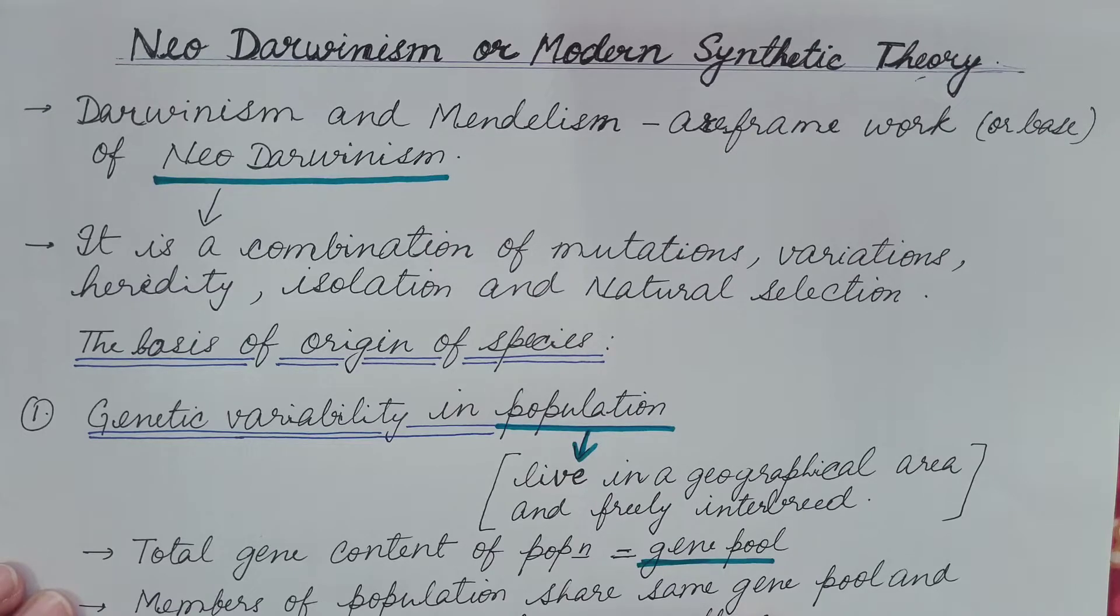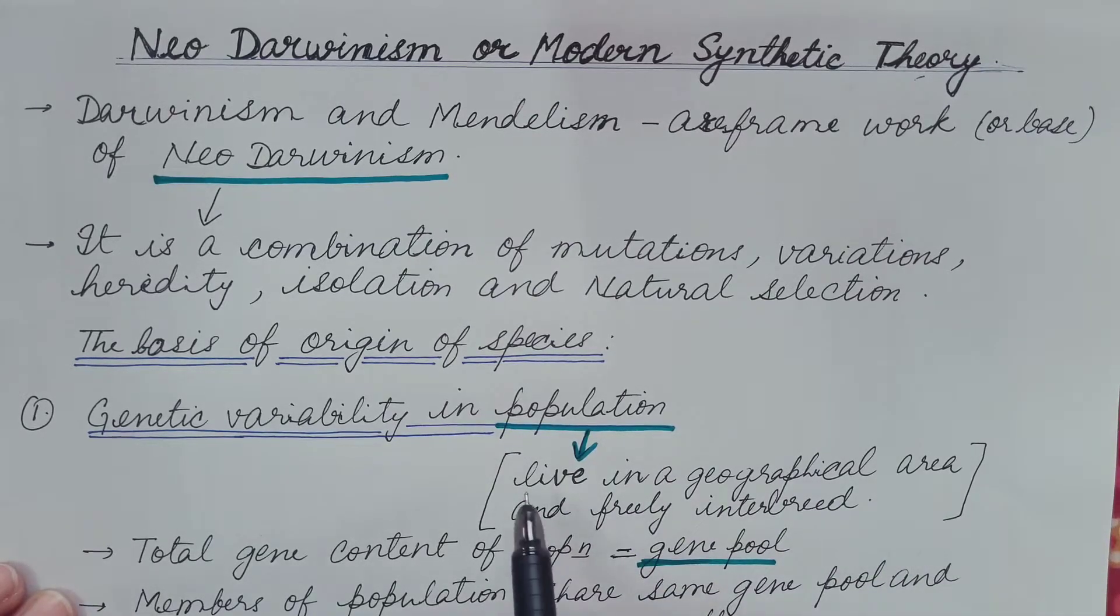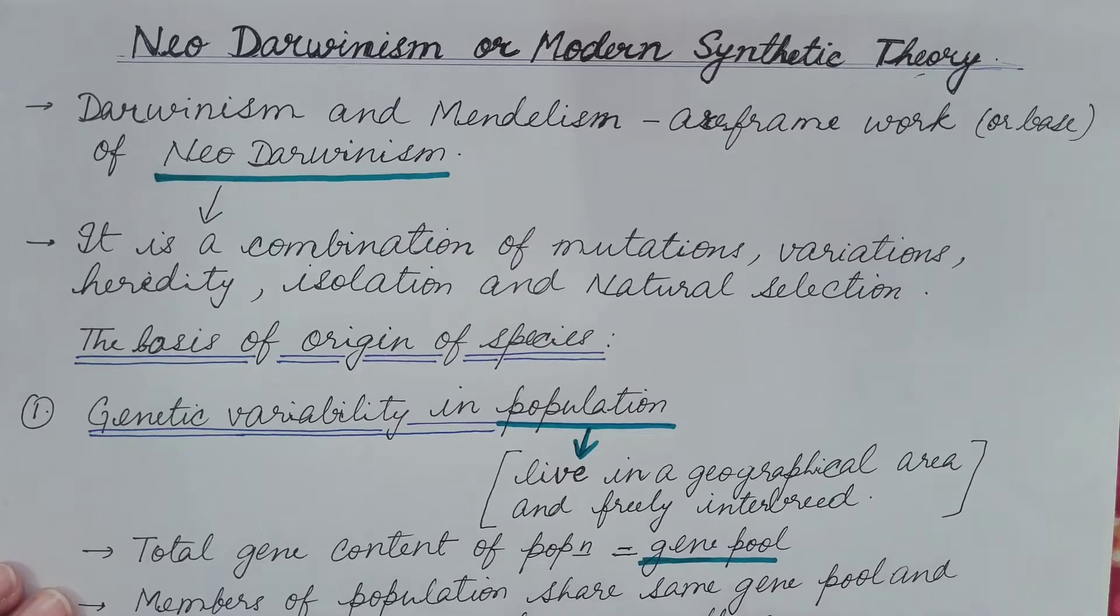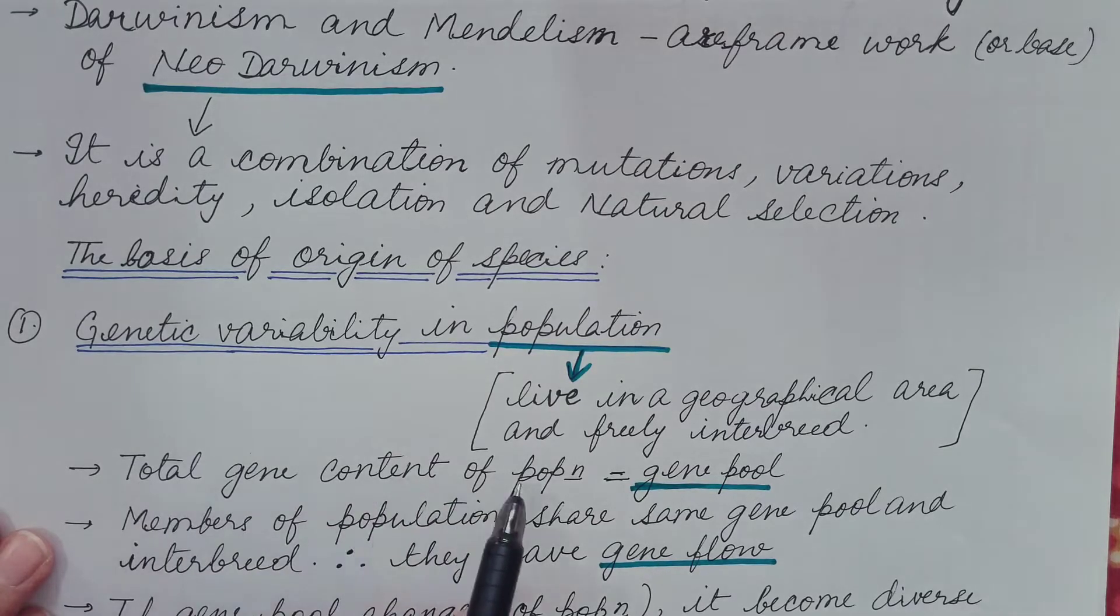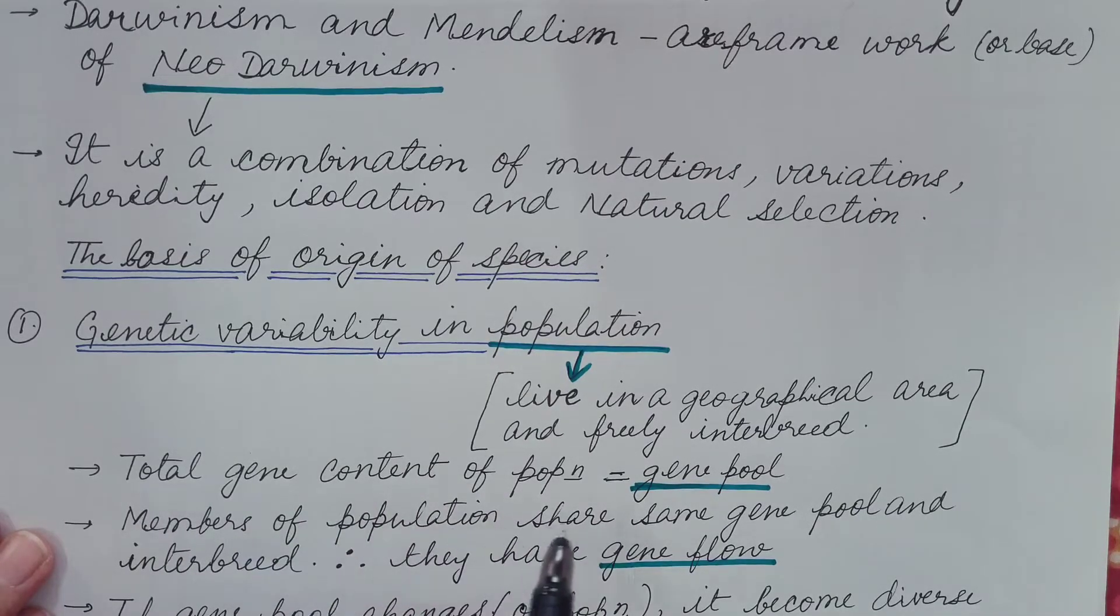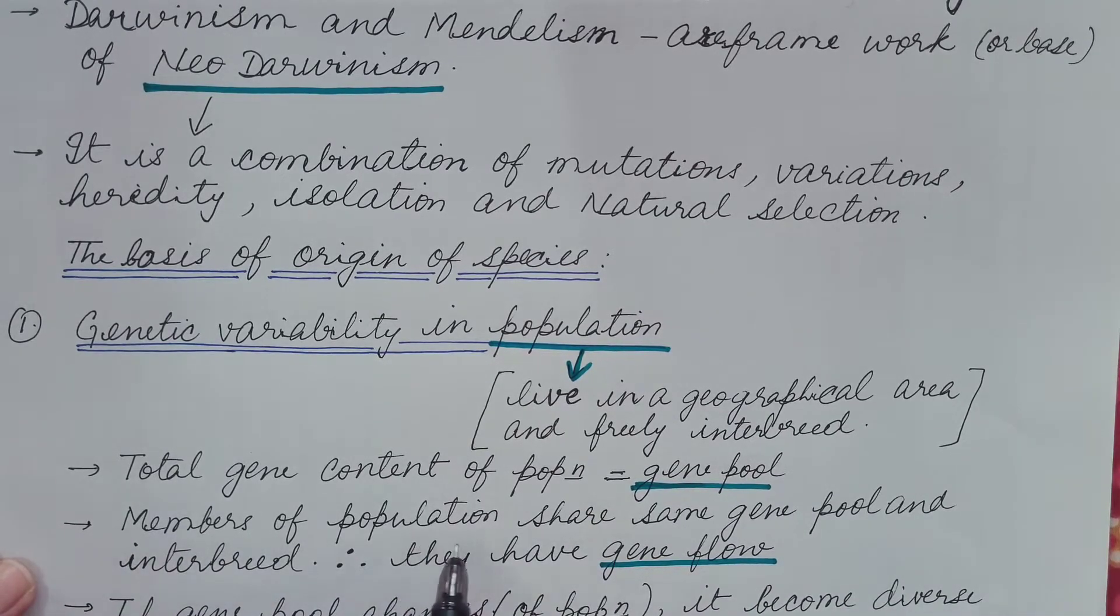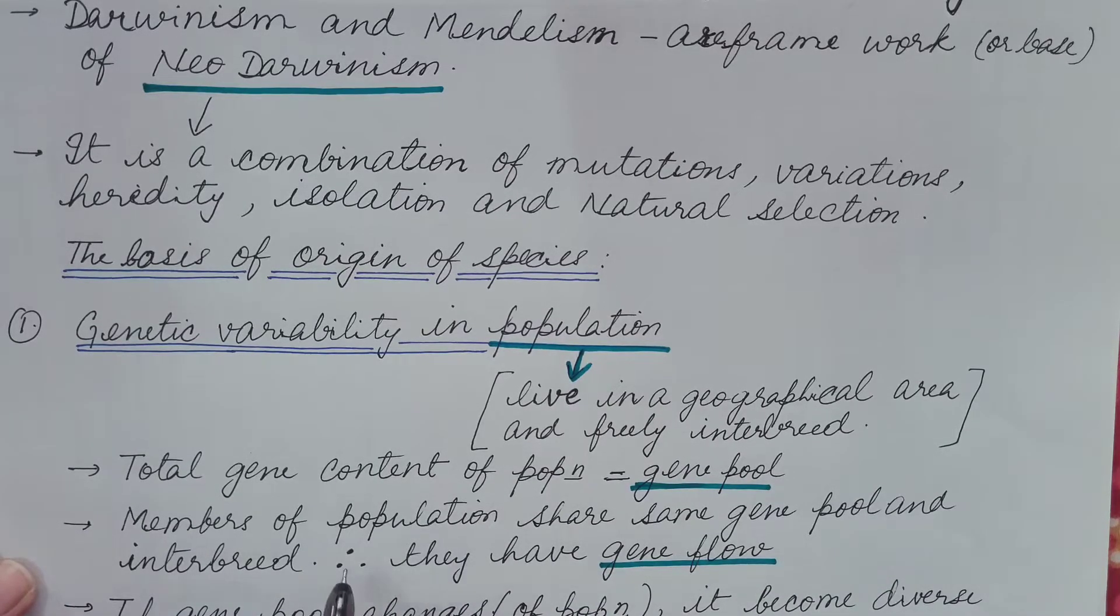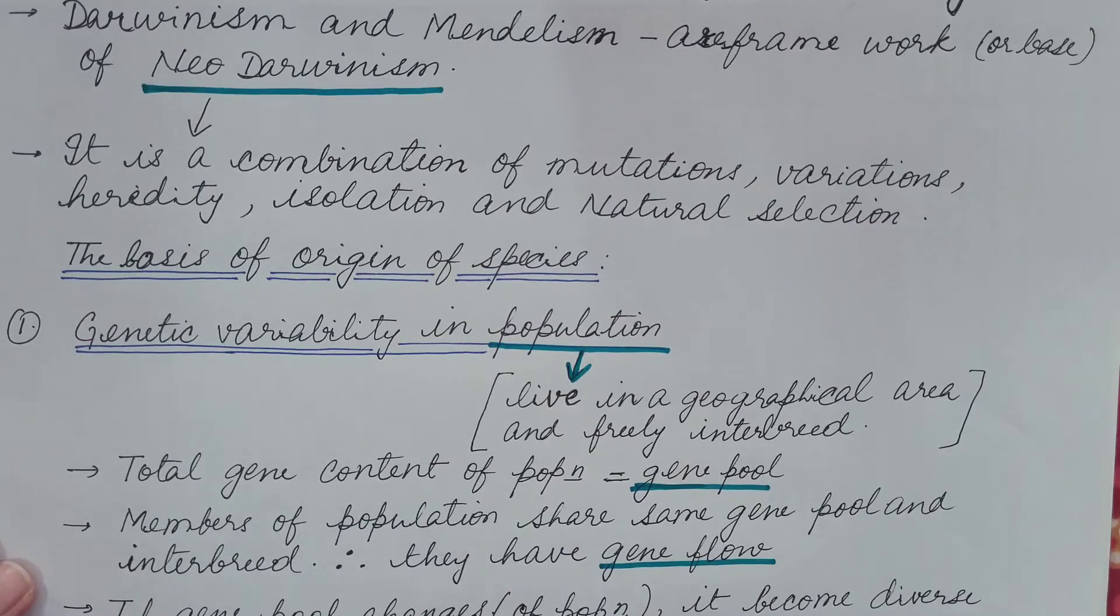So what is population? It is a group of individuals that live together in a geographical area and these freely interbreed. So there is a total gene content of the population which includes the genes of individuals and this together is known as gene pool. Members of population share same gene pool and they interbreed.